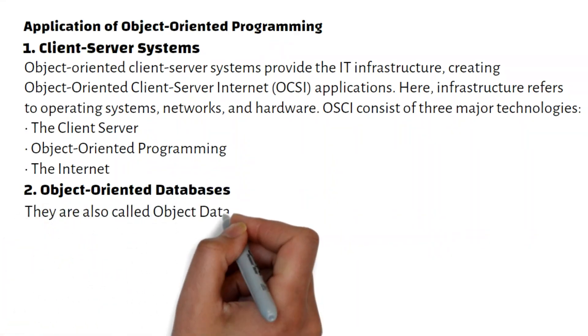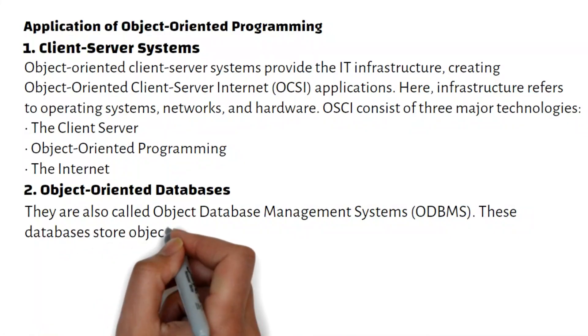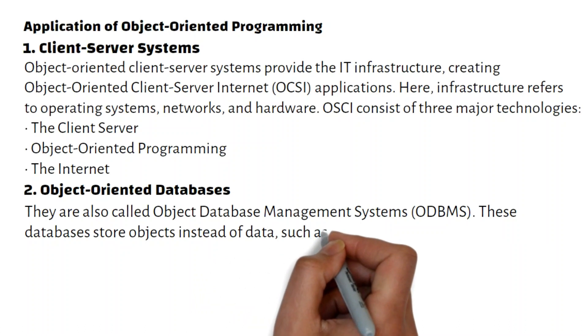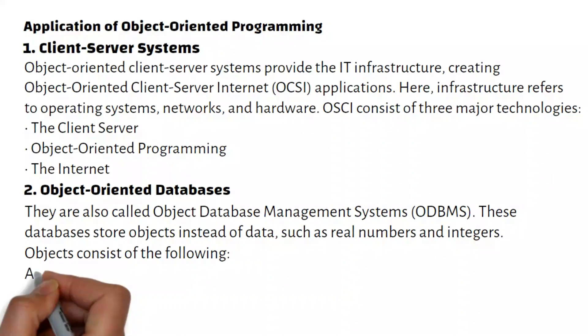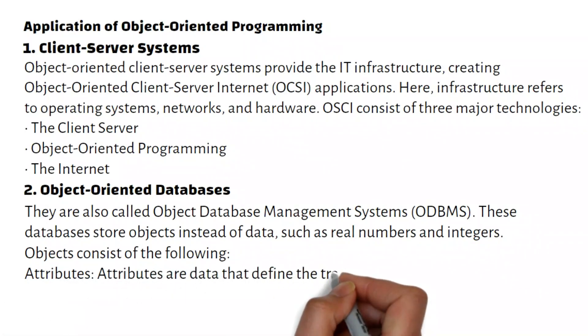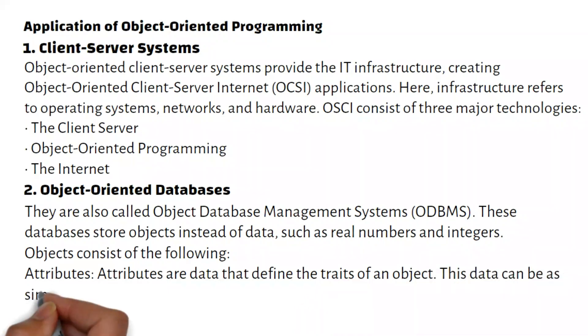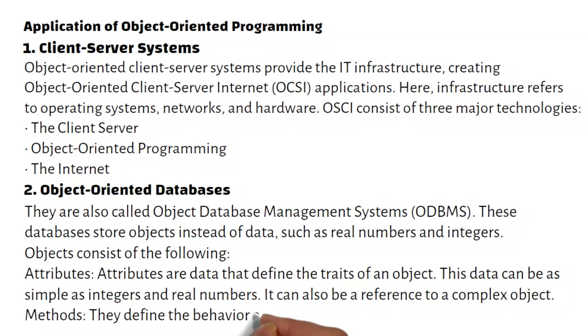Object-Oriented Databases, also called Object Database Management Systems (ODBMS), store objects instead of data such as real numbers and integers. Objects consist of attributes and methods. Attributes are data that define the traits of an object and can be as simple as integers and real numbers or references to complex objects. Methods define the behavior and are also called functions or procedures.